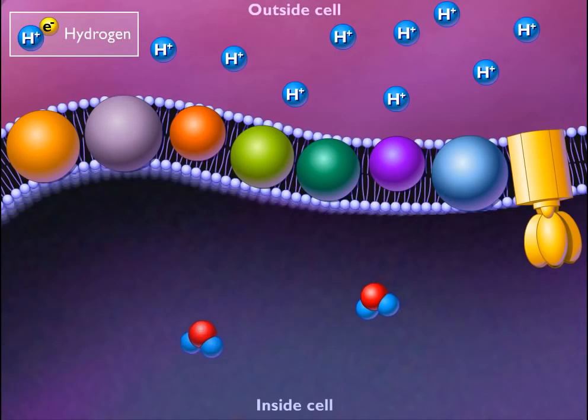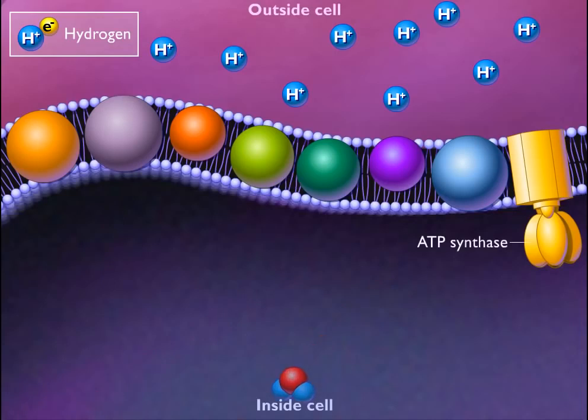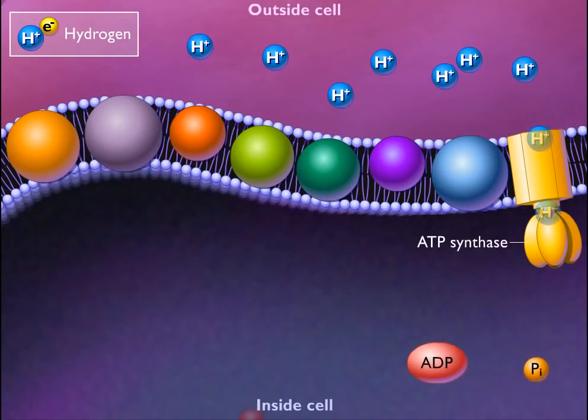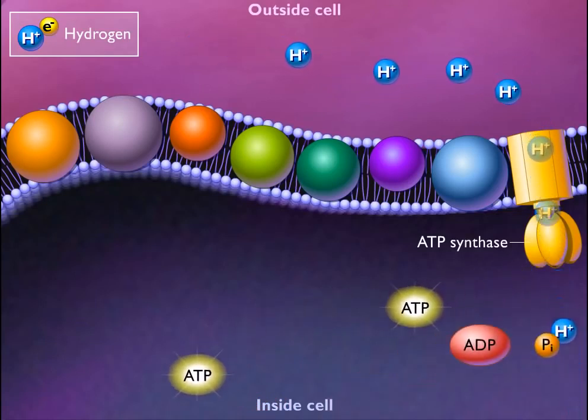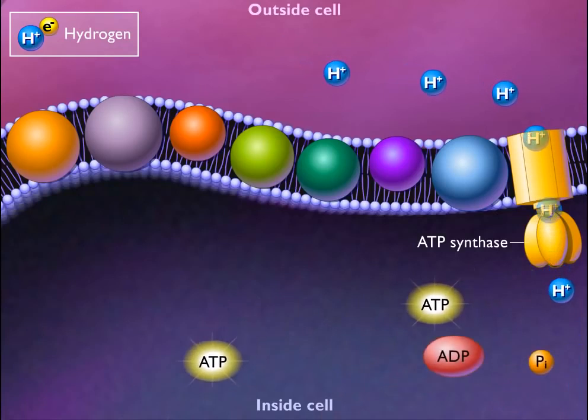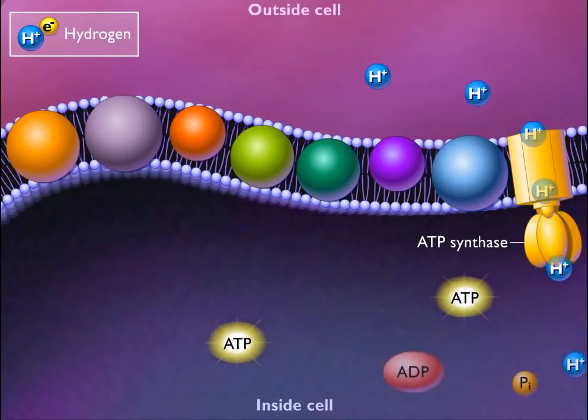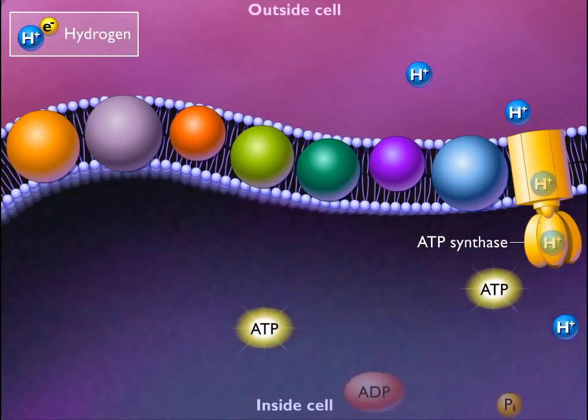The enzyme ATP synthase utilizes the energy of the proton motive force to synthesize ATP. This enzyme allows protons to pass back into the cell and couples the energy released in this process to the phosphorylation of ADP to form ATP.